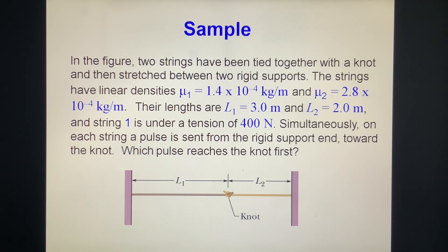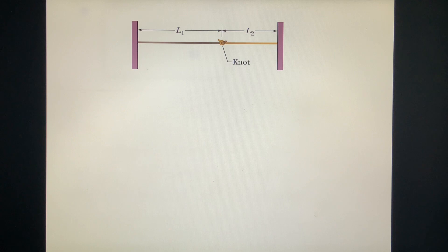Simultaneously, on each string, a pulse is sent from the rigid support end towards the knot. Which pulse reaches the knot first?